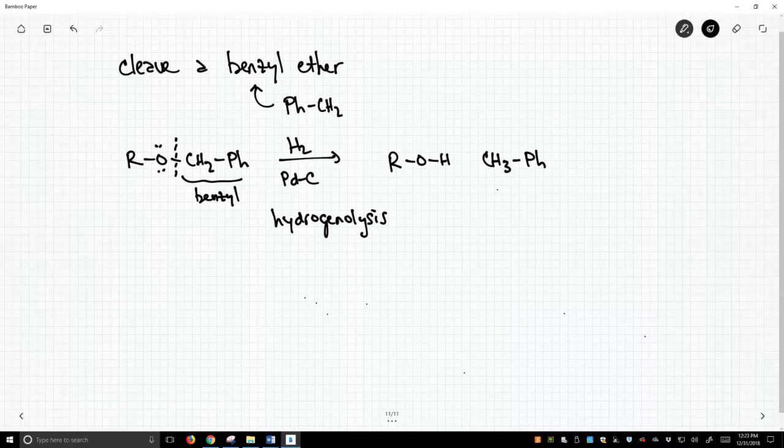So you treat it with hydrogen gas and palladium on carbon. Palladium on carbon is a solid. Hydrogen gas is obviously a gas. You mix it with your compound, you cook it all together, and then when you're done, you recover your alcohol.